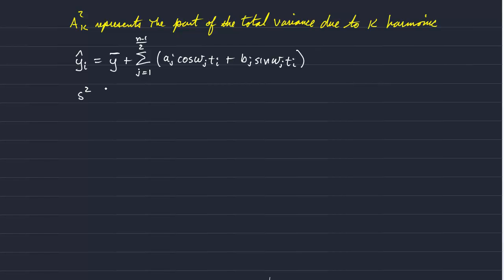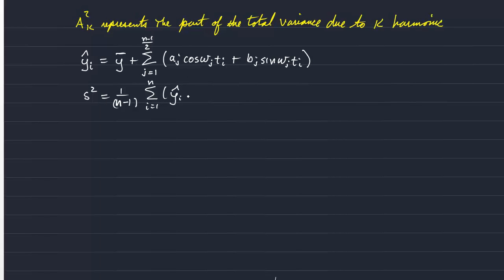And the total variance is just 1 over n minus 1 times the sum over the whole data record of our model, or each y value minus the deviation of the total record from its mean, squared.